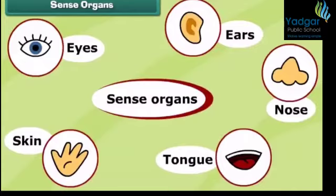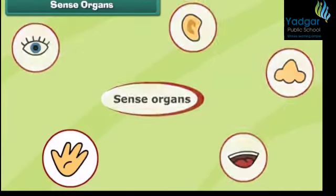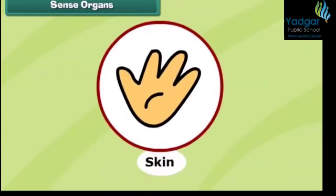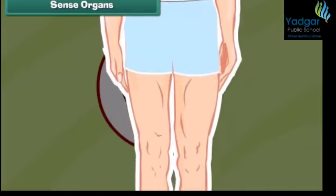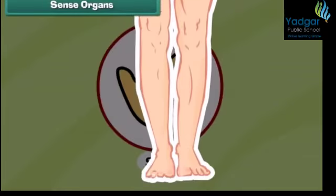The last sense organ is our skin. Without the skin we cannot feel anything. Skin holds all body organs together, so it is a protective layer. Hair also protects our skin and organs, and is present on the surface of the skin.